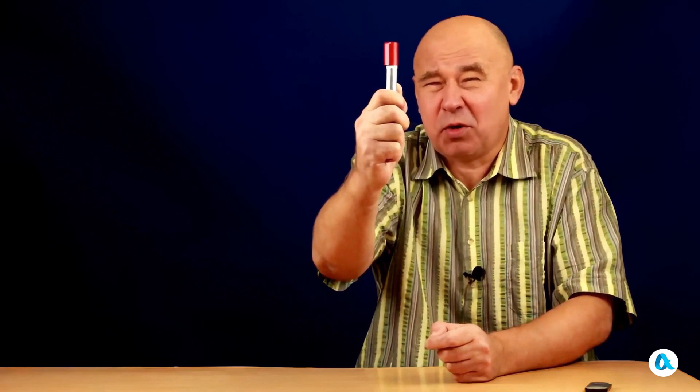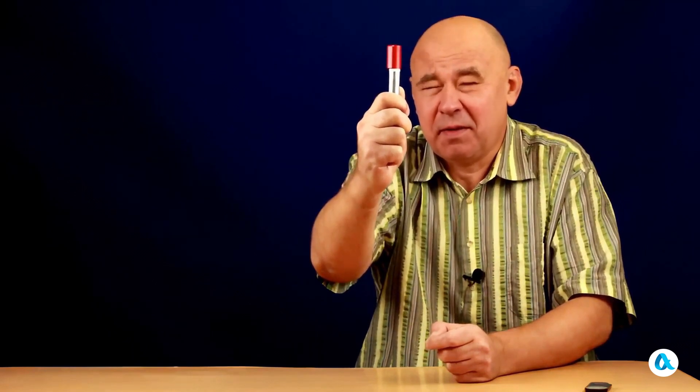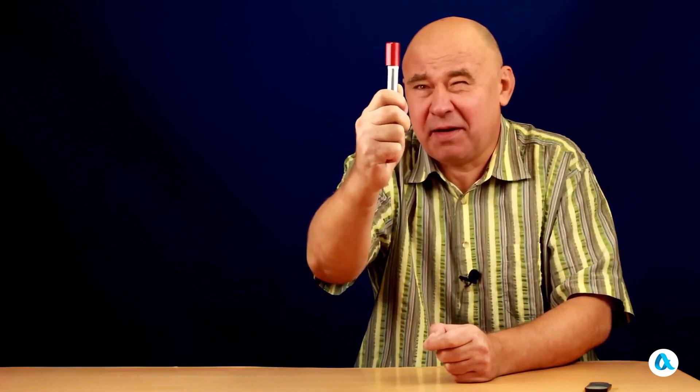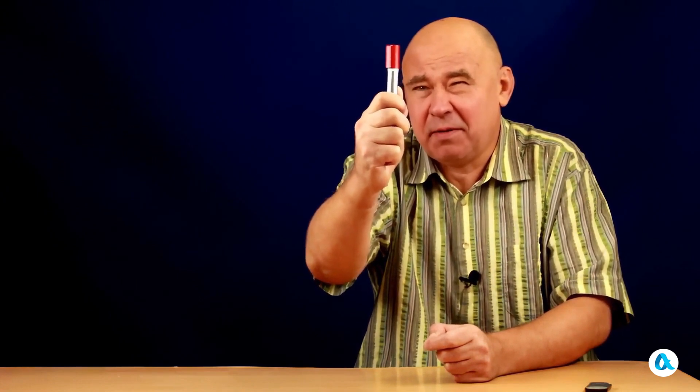I alternately close one eye and then the other, and I see how the marker shifts against the background of the pictures, moving left, then right, left, right, left, right. This is what is known as parallax shift.